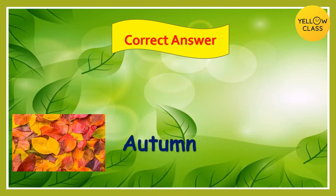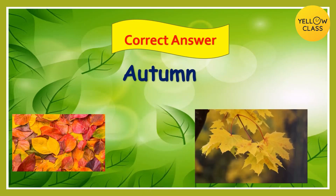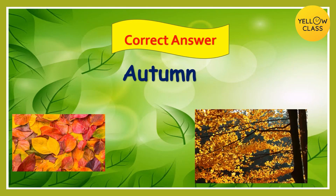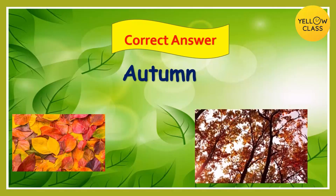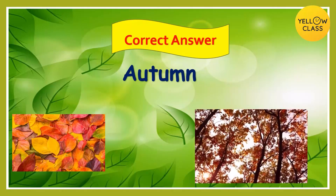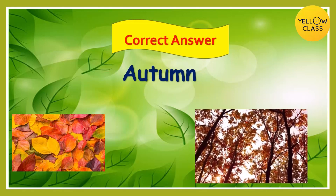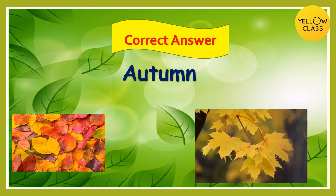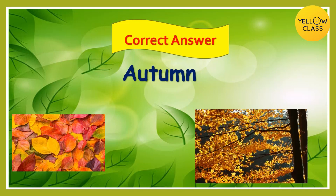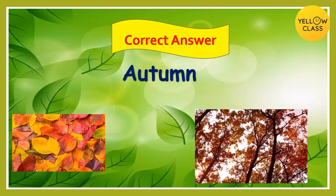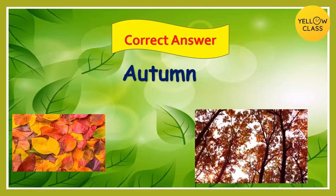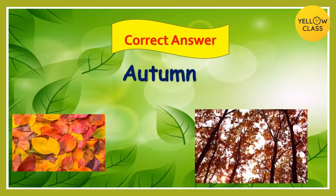The correct answer is autumn season! In autumn, leaves actually stop making food, so the green color disappears and the yellow and orange colors become more visible. This happens mainly because of the change in temperature of the day and the length of daylight.